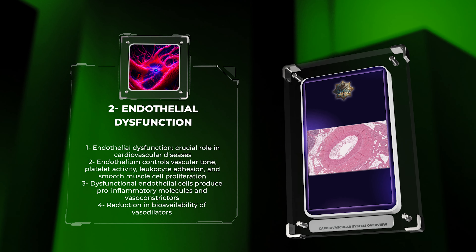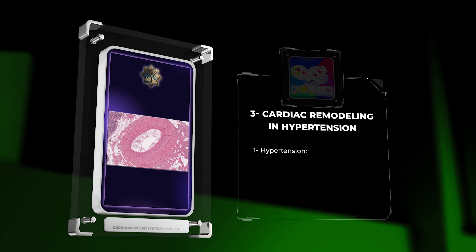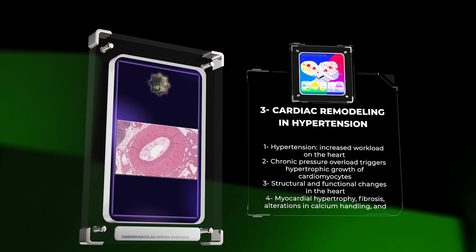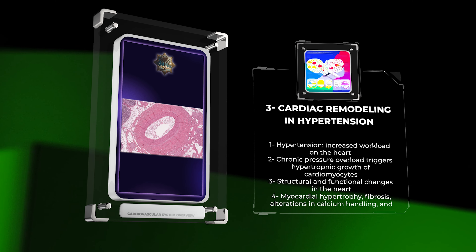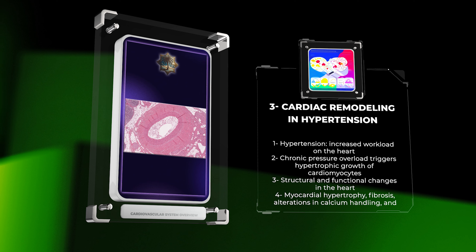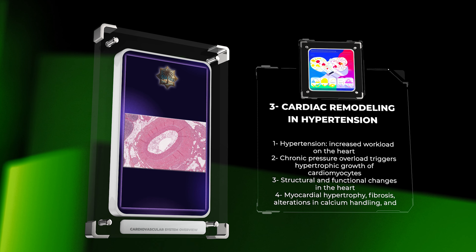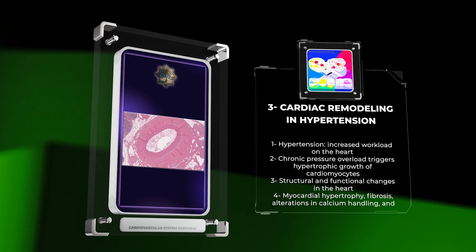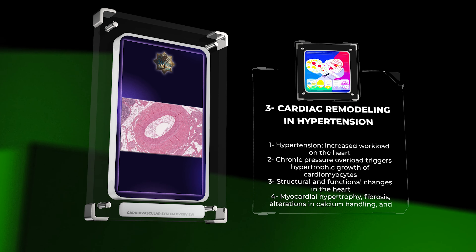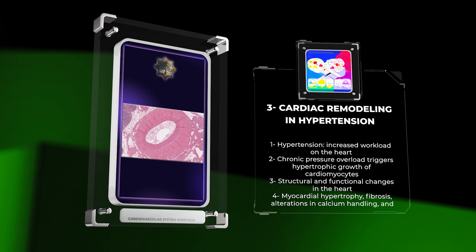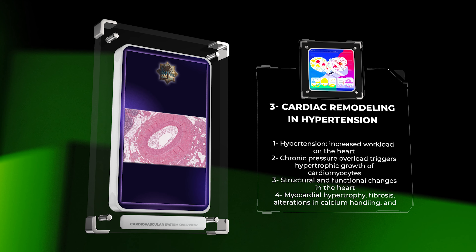This imbalance in endothelial function contributes to the pathogenesis of hypertension and atherosclerosis. Hypertension, also known as high blood pressure, imposes an increased workload on the heart, leading to cardiac remodeling. Chronic pressure overload triggers hypertrophic growth of cardiomyocytes, resulting in structural and functional changes including myocardial hypertrophy, fibrosis, alterations in calcium handling, and abnormalities in electrical conduction.